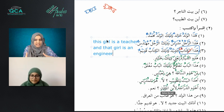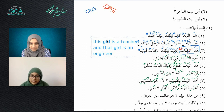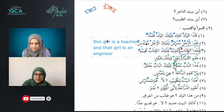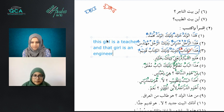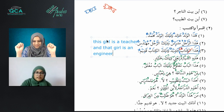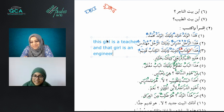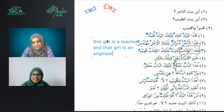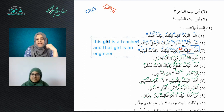'Li-ibni al-mu'adhdhin' — is this an idafa construction? Yes, that's right. Translate: 'Does this bike belong to the son of the mu'adhdhin?' Yes. Number nine — whose son is this? Who is this boy? He is a student from Iraq.